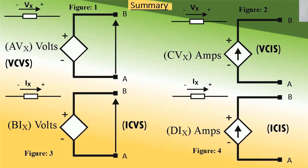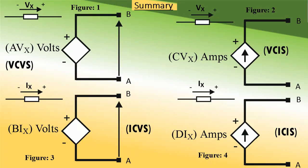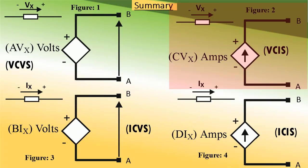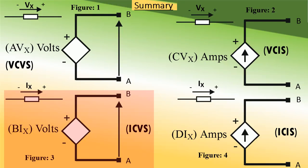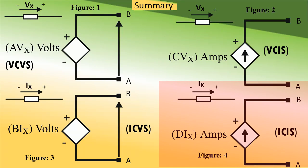Let us summarize what we have learned. I hope you are in a position to recognize the controlled sources shown here. Figure 1 is a voltage controlled voltage source, whereas figure 2 is a voltage controlled current source. Similarly, figure 3 is a current controlled voltage source, whereas figure 4 is a current controlled current source.